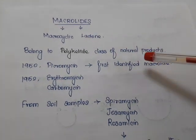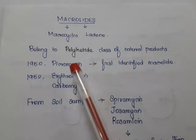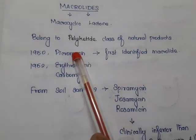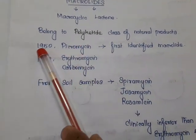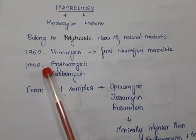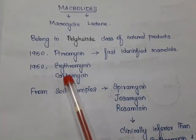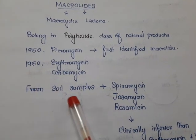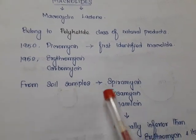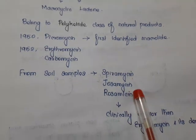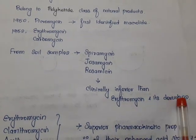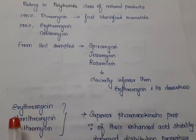The first identified macrolide was picromycin, isolated in 1950. Next, erythromycin and carbomycin were identified in 1952. Some macrolides were obtained from soil — examples are spiramycin, josamycin, and rosamycin — but they are clinically inferior to erythromycin and its derivatives.